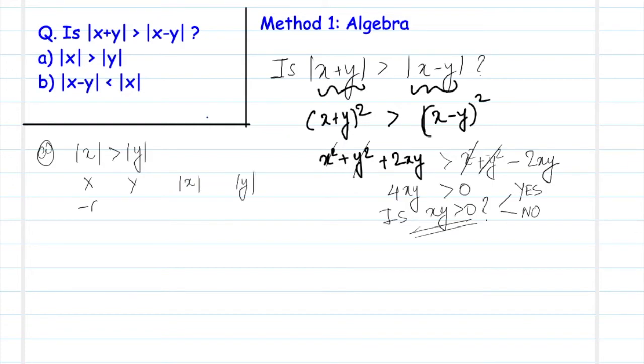So if I take different values of x and y such that mod x is greater than mod y, let's take minus 6 and 4. So mod x is 6, y is 4. Is xy greater than 0? The answer is no. If we take minus 6 and minus 4, this kind of remains the same, and here we get yes xy is greater than 0. So we are getting two different kinds of answers. Hence this is insufficient to solve the question.